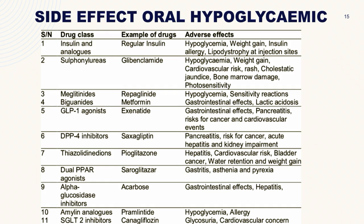When presenting a diabetic case, you need to know the side effects of the oral hypoglycemic drugs the patient is consuming. Insulin and analogues: hypoglycemia, weight gain, insulin allergy, and lipodystrophy at injection sites. Sulfonylureas: hypoglycemia, weight gain, cardiovascular risk, rash, cholestatic jaundice, bone marrow damage, and photosensitivity. Meglitinides and biguanides: hypoglycemia, sensitivity reactions, gastrointestinal effects, and lactic acidosis. GLP-1 agonists: gastrointestinal effects, pancreatitis, risk for cancer, and cardiovascular events.